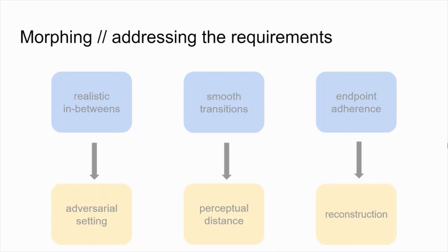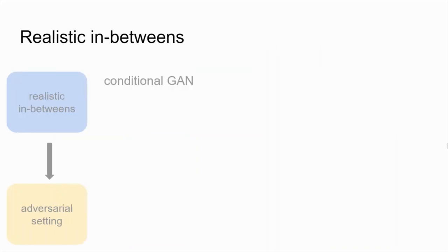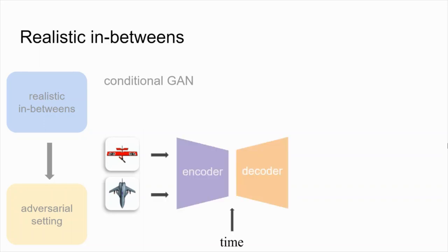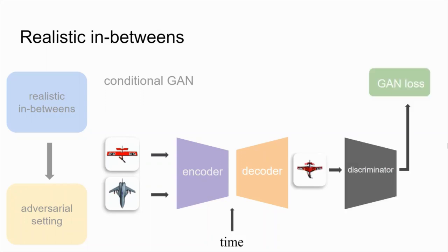We devise a generative framework with different components to target the aforementioned requirements. The generative adversarial setting is a well-known method to train a system that is able to synthesize diverse instances from a given target distribution. Aiming for realistic in-between frames, we employ a conditional GAN setting. Given two endpoint images as input, as well as a desired frame timestamp that determines the position of the output frame within the morphing sequence, we pass the inputs through a generator composed of an encoder followed by a decoder. The decoder outputs a frame, which is passed on to a discriminator to be evaluated as either real or fake.